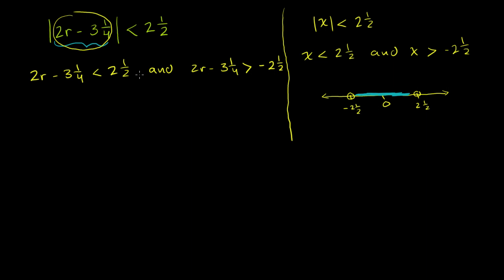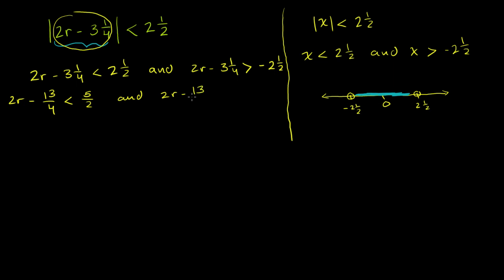Let's solve each of these independently. I don't like mixed numbers, so let's convert them to improper fractions. 2r minus 3¼ becomes 2r minus 13 fourths — since 3×4=12, plus 1 is 13 — and that is less than 5 halves, since 2×2=4, plus 1 is 5. The second inequality: 2r minus 13 fourths has to be greater than negative 5 halves.